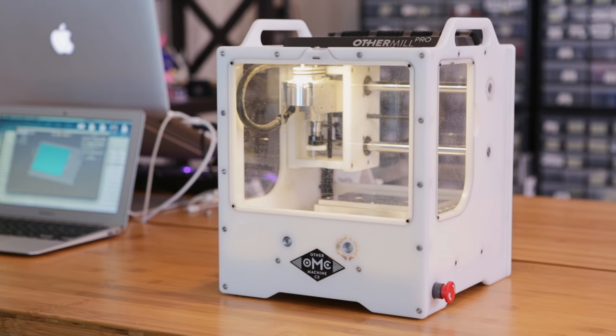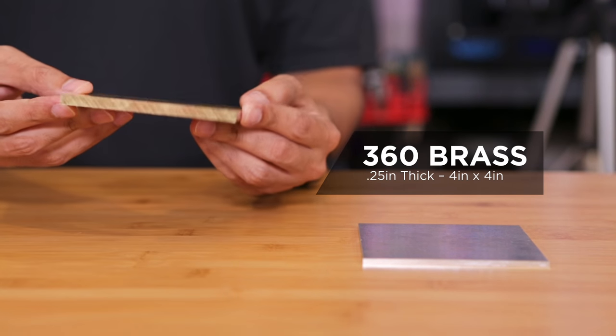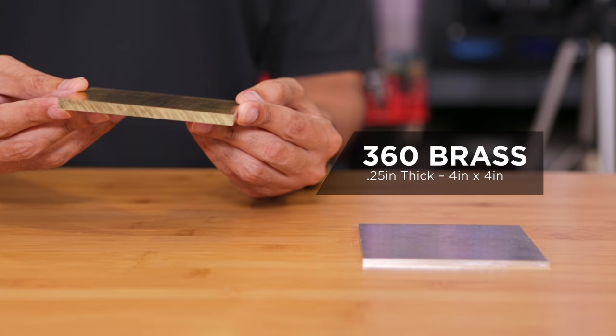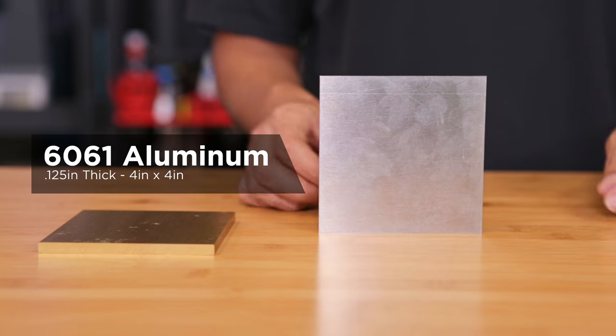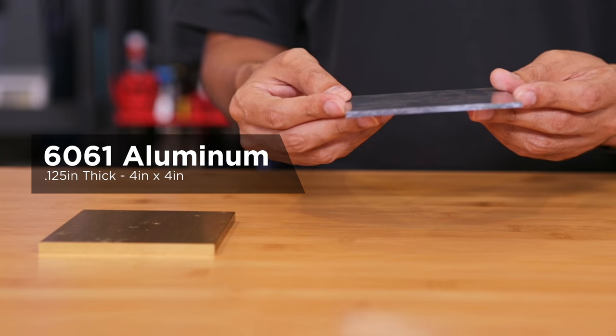To machine our parts, I'll be using the other mill desktop CNC. For the base plate, I want to use this 360 brass, which has a really nice color to it and it's supposed to be pretty easy to machine. For the triangle shape, I'm going to use aluminum, which is lightweight and should look pretty nice when it's cut and polished.